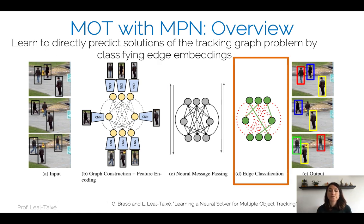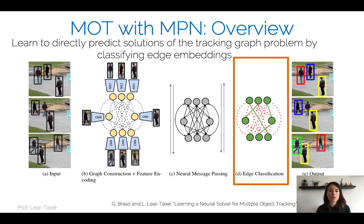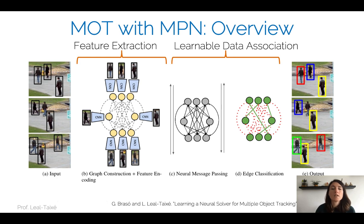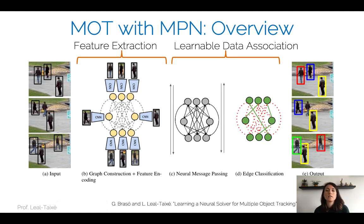Once we have created this graph with initial embeddings for nodes and edges, we do a series of message passing steps. These steps mean nodes communicate with edges, edges communicate with nodes, and all information of the different bounding boxes and detections is propagated across the entire graph. Once done, we put an MLP on top of each edge and classify edges into active connections — the two nodes belong to the same trajectory — or inactive connections, meaning the two bounding boxes have nothing to do with each other. In the first step we construct the graph; in the second we pass along information; in the third we robustly classify edges. This maps to CNN terminology: graph construction and feature encoding as feature extraction, and neural message passing plus edge classification as learnable data association.